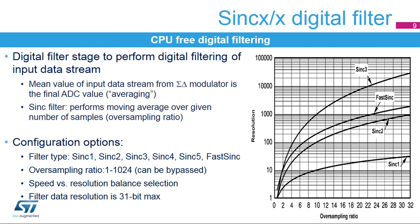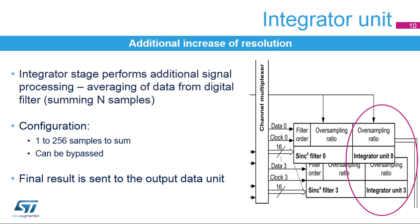The digital filter averages the 1-bit input data stream from the sigma-delta modulator into a higher resolution, but with a slower data output. The digital filter is sync-x type with an order from 1 to 5. A fast sync-type filter is also available for selection. The oversampling ratio means how many samples will be averaged in a single filter run, and can be selected in a wide range from 1 to 1,024. Not all combinations of filter order and oversampling ratios are available because in higher filter orders, the oversampling ratio must be reduced to not overflow the 31-bit data width, which is the internal filter resolution. The integrator unit performs additional simple averaging of data provided by the digital filter, summing data from 1 to 256 samples. The correct configuration must ensure the final data length fits into the 31-bit width, which is the resolution of the internal integrator.